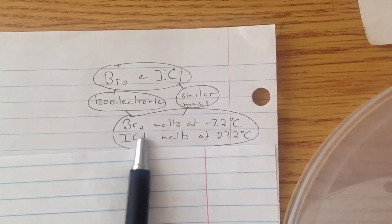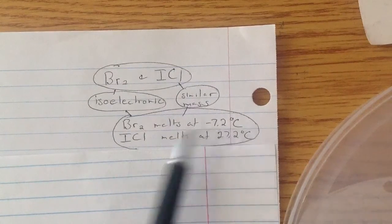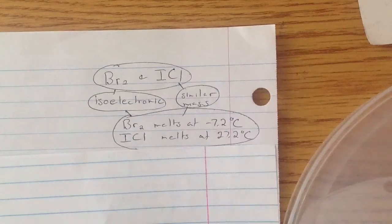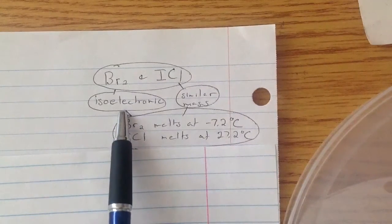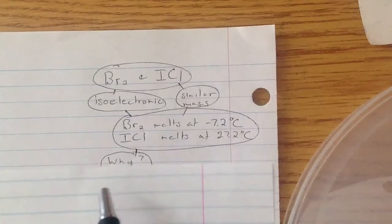And here's two facts: Br2 melts at negative 7.2 Celsius, and ICl melts at 27.2 Celsius. So even though they're isoelectronic and similar mass, they melt at different degrees. Why?